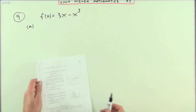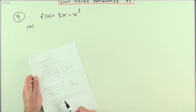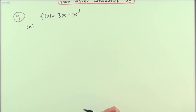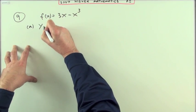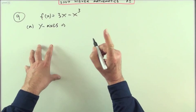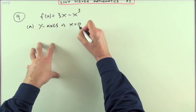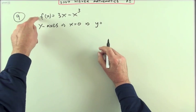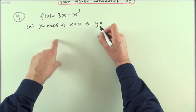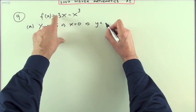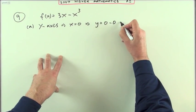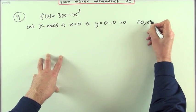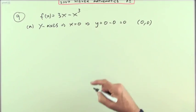Well the first part. Find the exact values where the graph cuts the x and y axis. Easy bit first. Y axis, if you're on the y axis you know that the x coordinate must be 0 in which case y is going to equal, remember y equals the value of the function, y will equal 0 minus 0. Just put 0 minus 0 which is 0. So it cuts at 0, 0. That means it's also cut the x axis there.